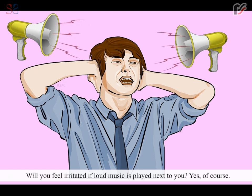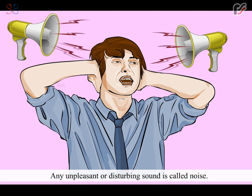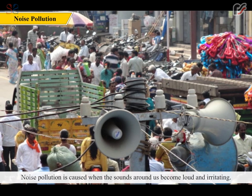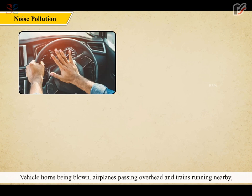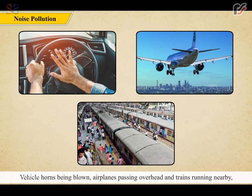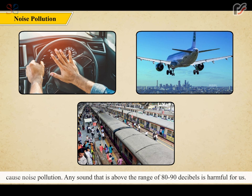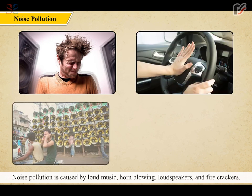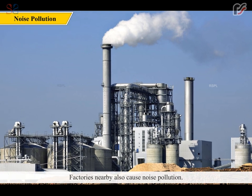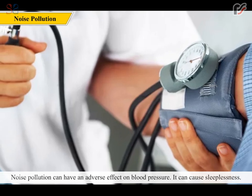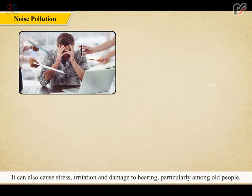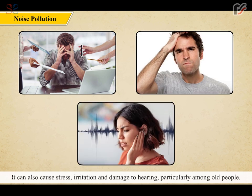Will you feel irritated if loud music is played next to you? Yes, of course. Any unpleasant or disturbing sound is called noise. Noise pollution is caused when the sounds around us become loud and irritating. Vehicle horns being blown, airplanes passing overhead and trains running nearby cause noise pollution. Any sound above the range of 80 to 90 decibels is harmful for us. Noise pollution is caused by loud music, horn blowing, loudspeakers and firecrackers. Factories nearby also cause noise pollution. Noise pollution can have an adverse effect on blood pressure. It can cause sleeplessness, stress, irritation and damage to hearing, particularly among old people.